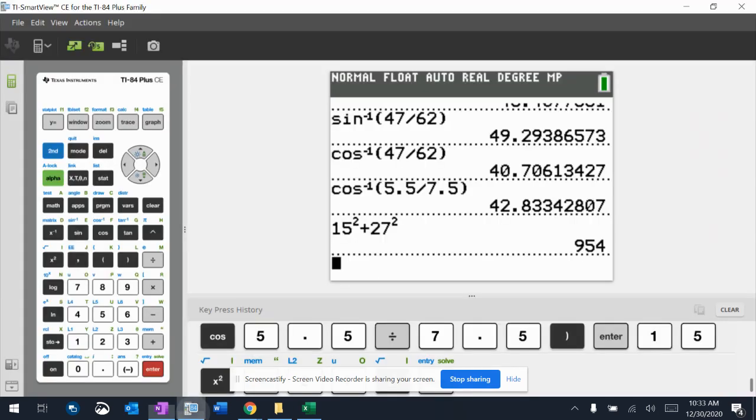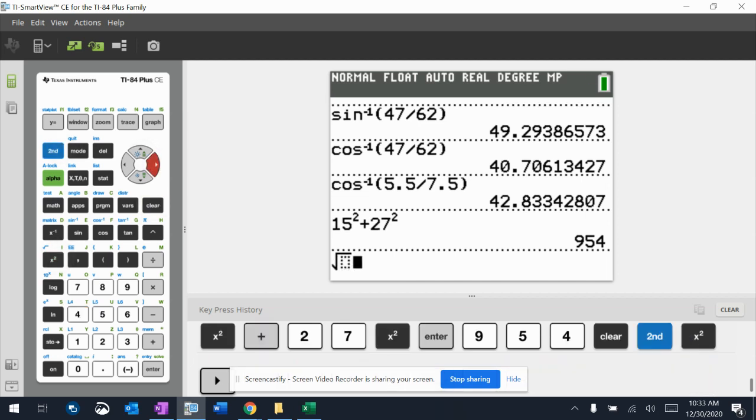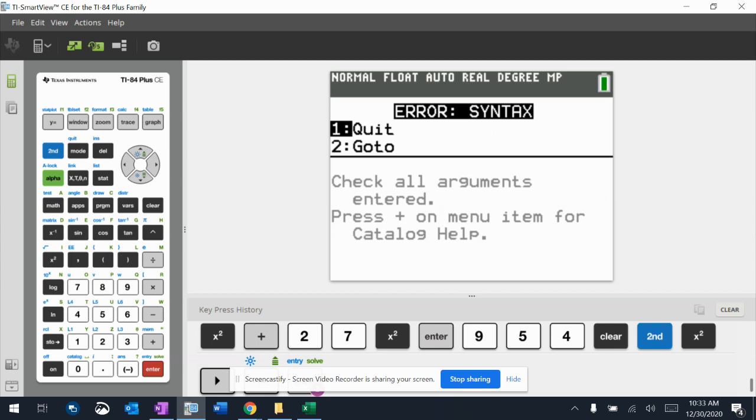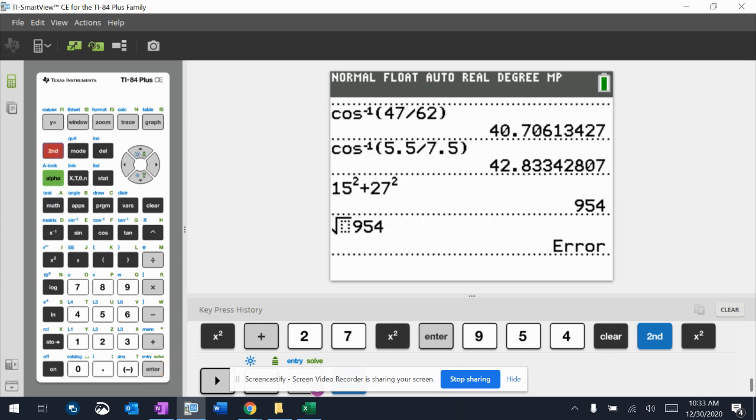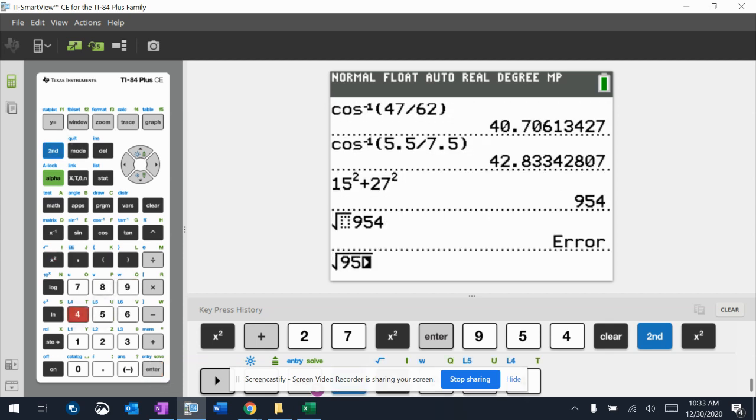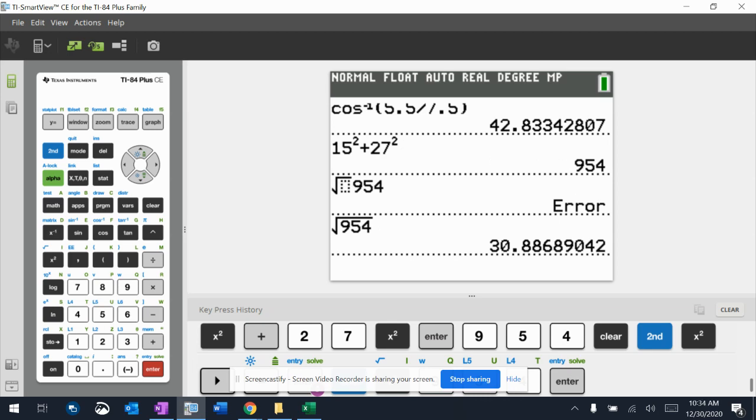And I'm going to take the square root to get rid of the square. And that's it. Okay. Square root 30.886.